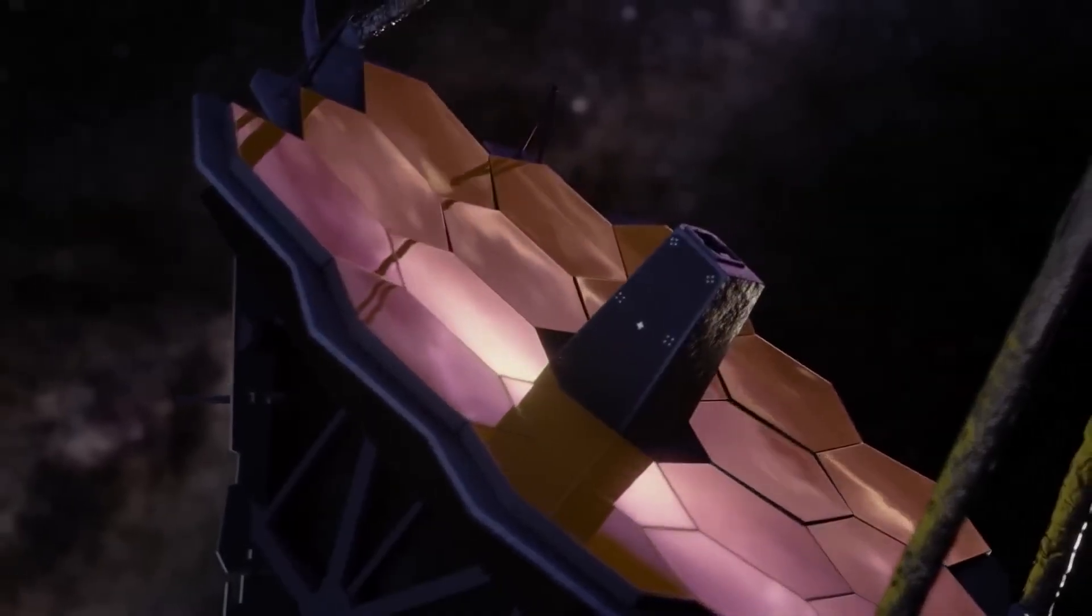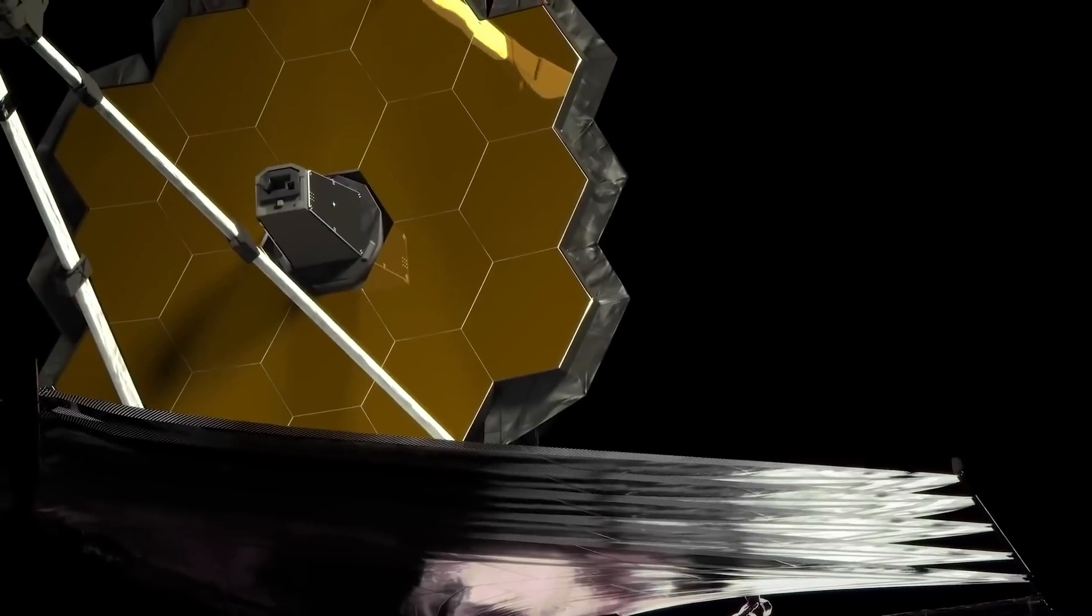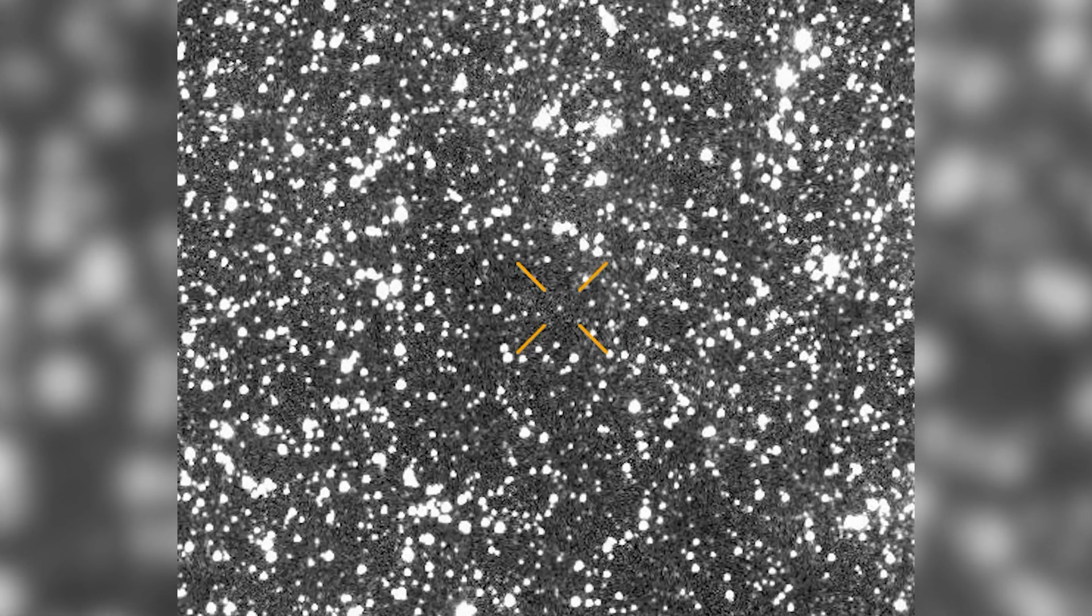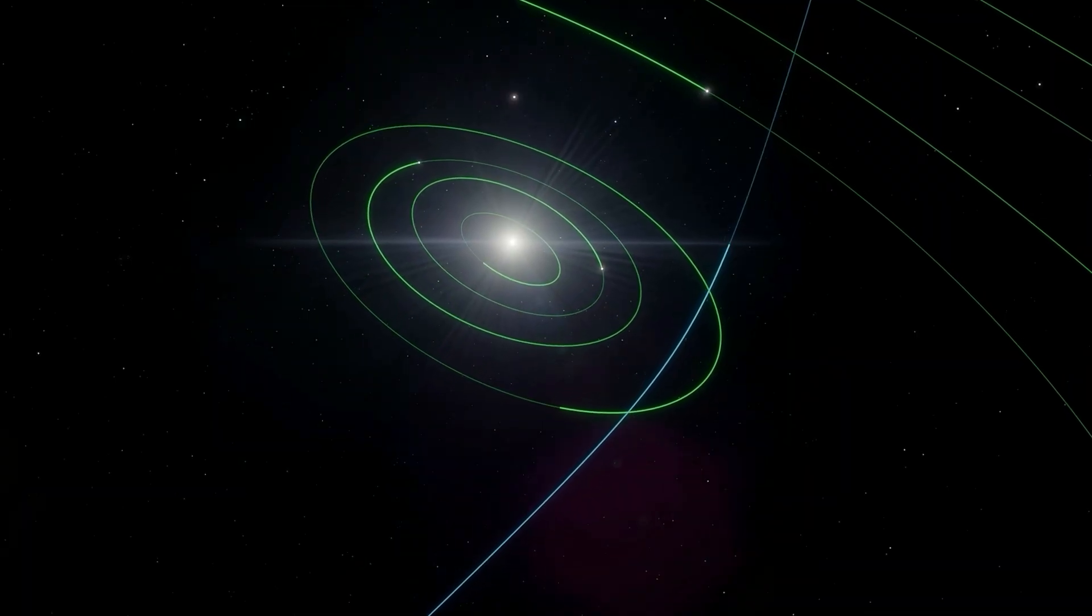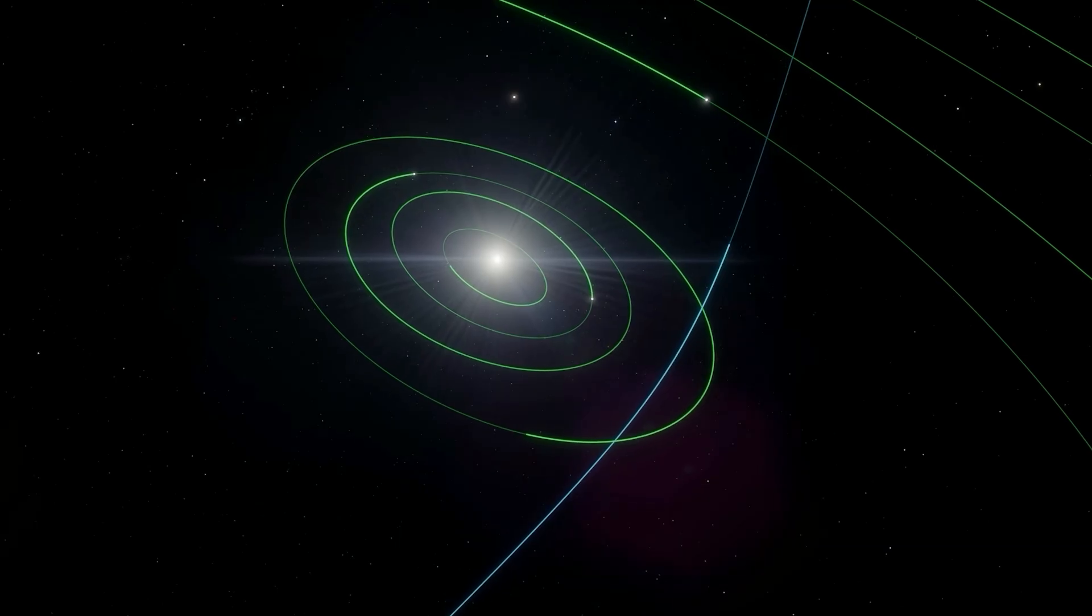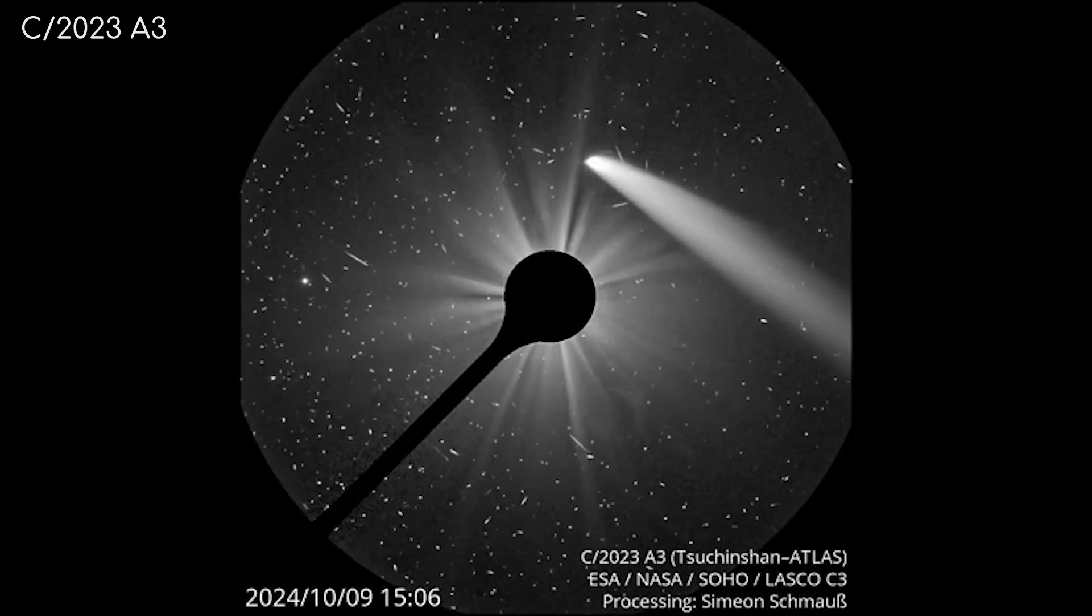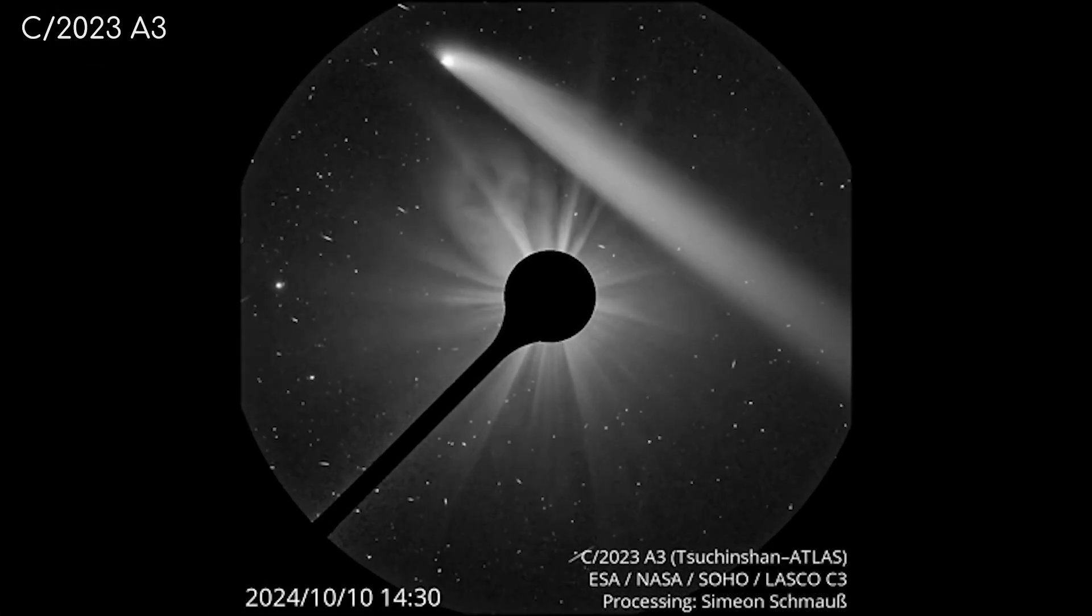So when the James Webb Space Telescope captured the first real image of this object, it didn't just send back pixels. It sent a warning. That maybe we are not alone. Maybe we never were. And maybe, just maybe, someone is watching.